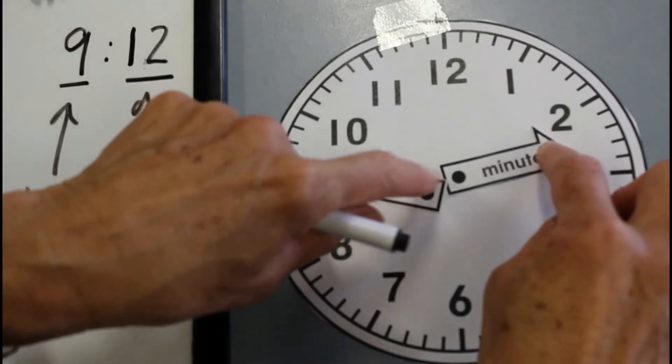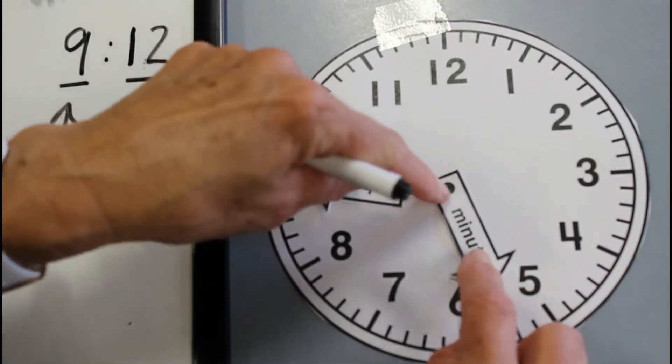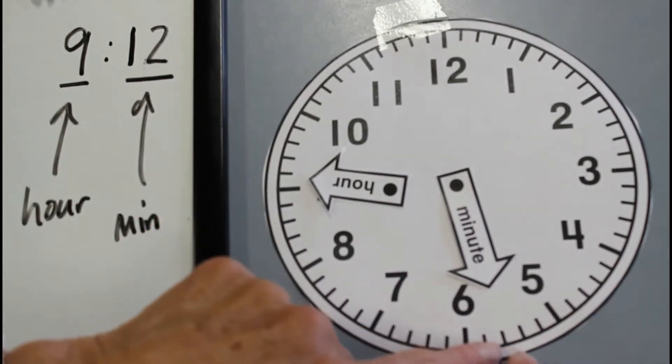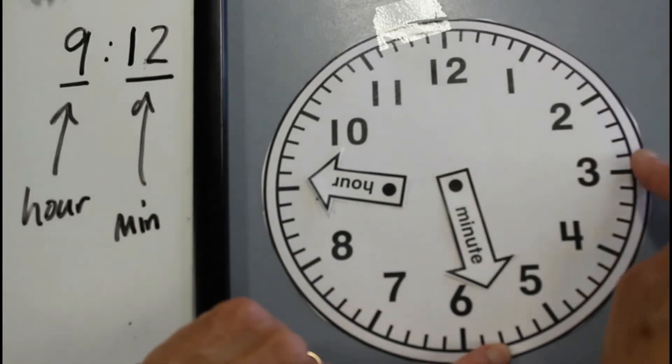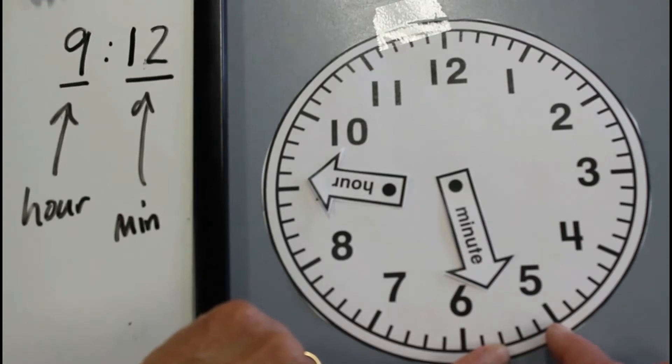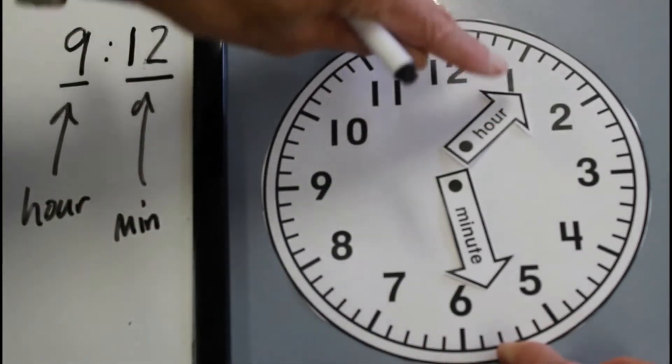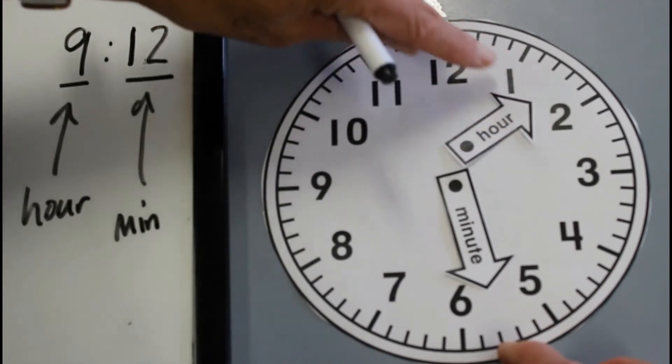When we move the clock hand right around, say if we get to here, let's say the minute hand is now pointing exactly to this number here. We know that this is five, ten, fifteen, twenty, twenty-five. This is twenty-five, twenty-six, twenty-seven, twenty-eight. This is twenty-eight minutes past. Let's make it twenty-eight minutes past one.